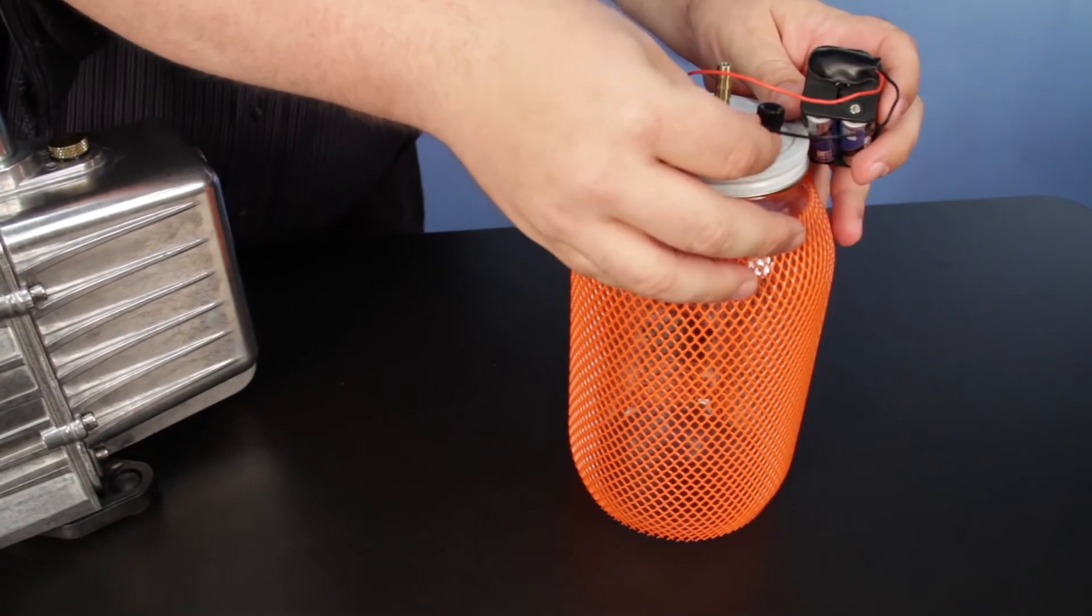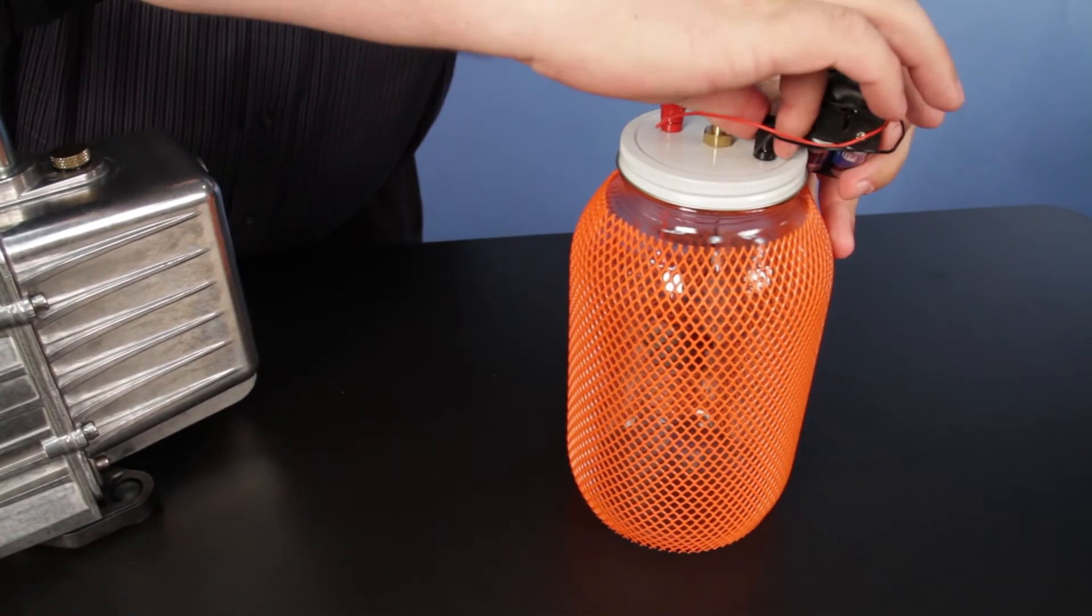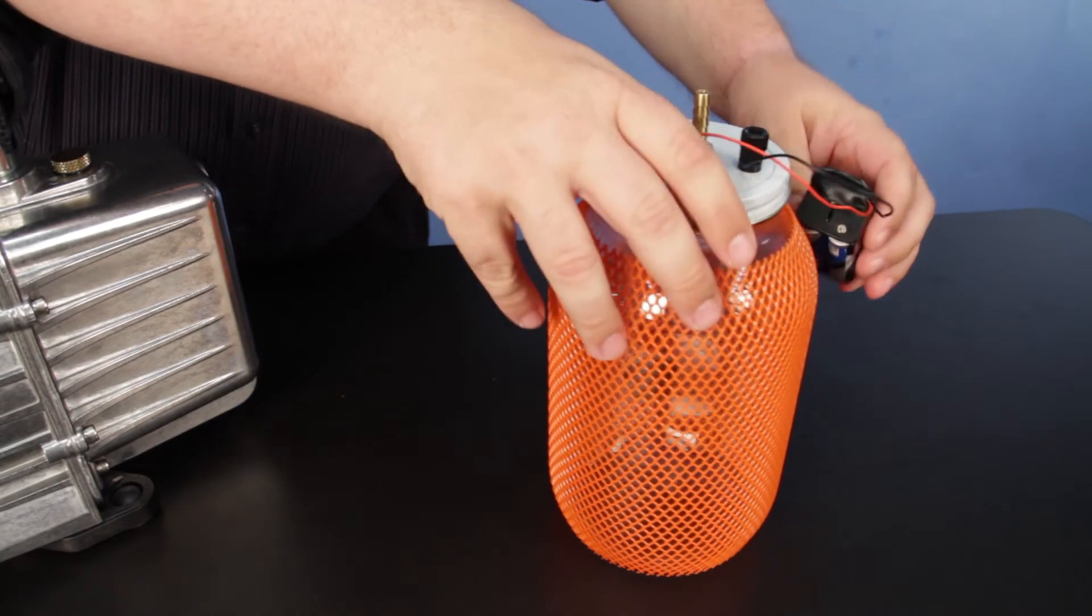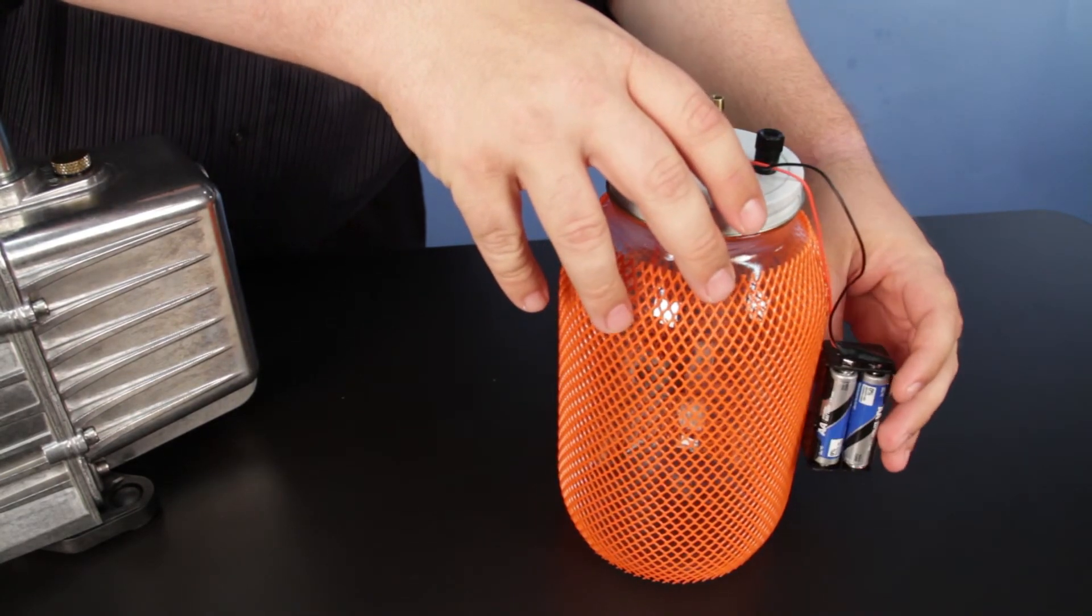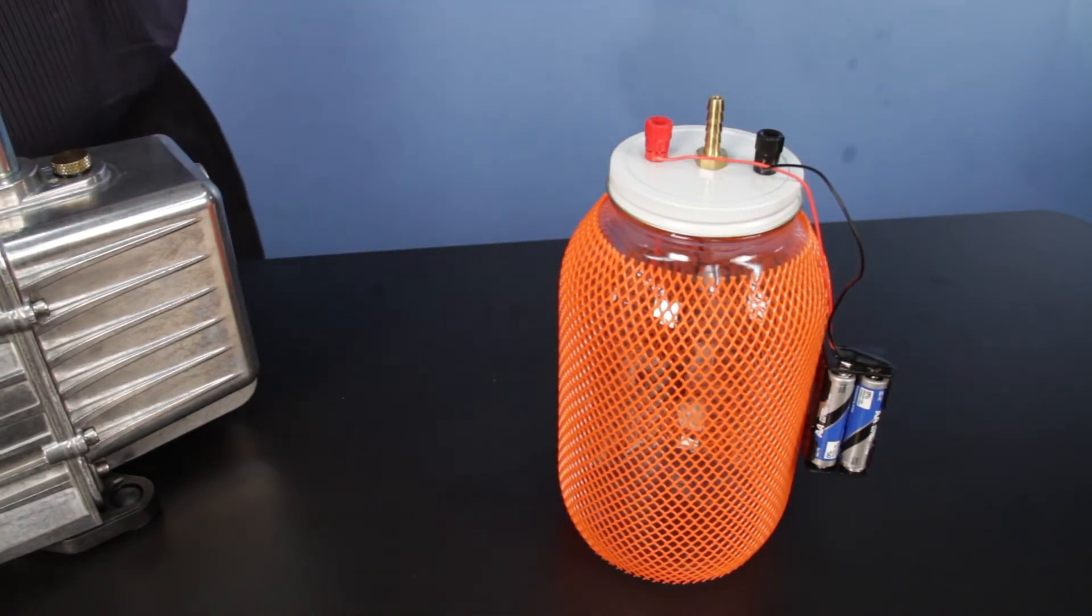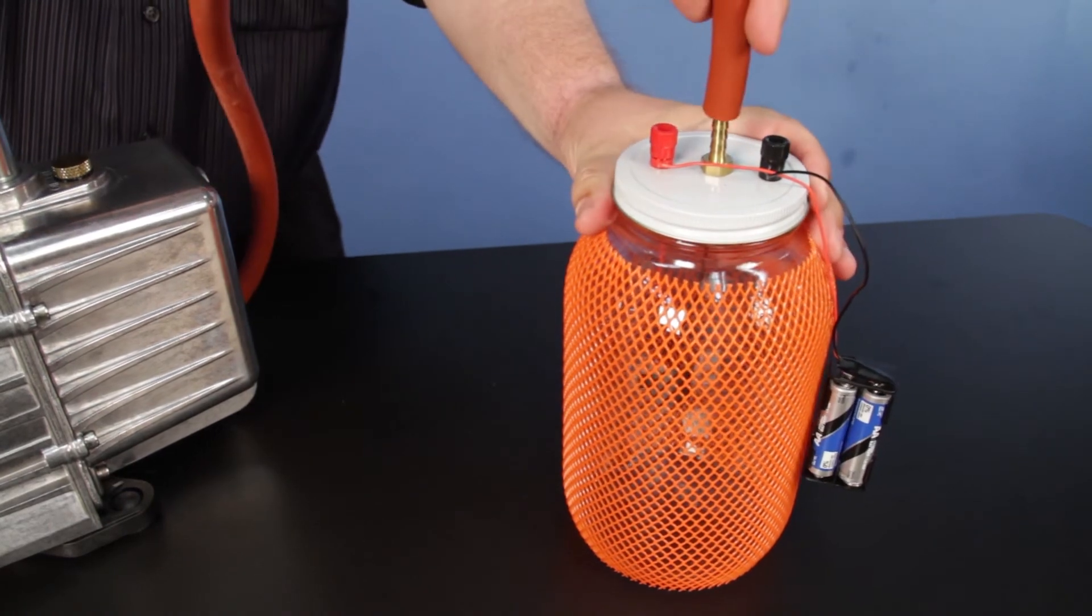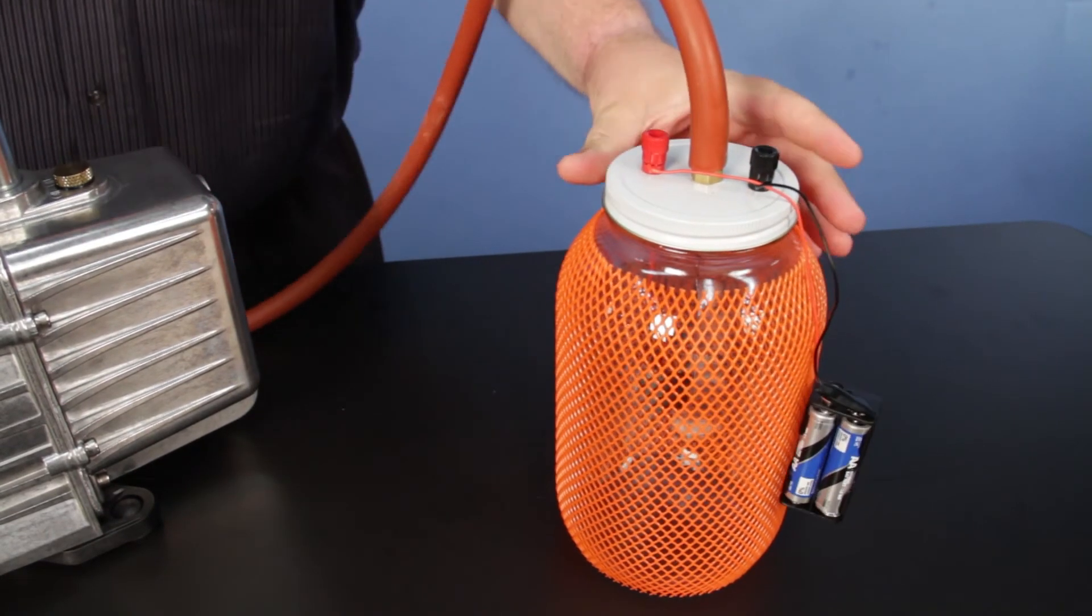The classic bell in the vacuum demonstration is used to show that sound waves require a medium to propagate. The two-stage vacuum will render the buzzer completely silent. The oil-less vacuum pump will greatly reduce the sound of the buzzer.